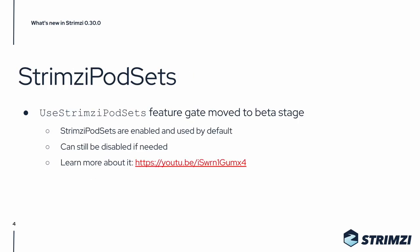The main change is that the useStreamC PodSets feature gate is now moved to beta stage. That means that StreamC PodSets are enabled and used by default, but if needed they can still be disabled. If you want to learn more about StreamC PodSets — what they are and why we are using them — you can check out our YouTube video which is only about StreamC PodSets.